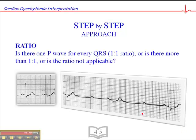Then we look at the ratio of P-waves to QRS complexes. Normally the ratio is 1 to 1 — one P-wave per QRS. In the example shown, there are 3 P-waves per QRS, which is a 3-to-1 ratio. We see that in heart blocks.